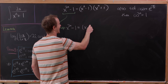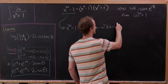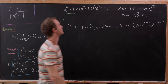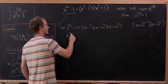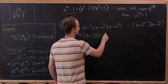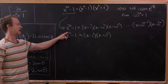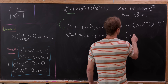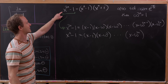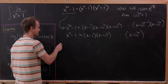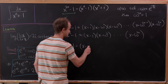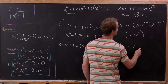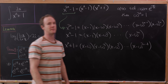We know x to the 2n minus 1 factors as (x minus 1)(x minus omega)(x minus omega squared) all the way up to (x minus omega to the 2n). Similarly, x to the n minus 1 factors using exactly the even powers: (x minus 1)(x minus omega squared) all the way up to (x minus omega to the 2n). Since x to the n plus 1 is the quotient, that gives us the factorization of x to the n plus 1 using all the odd roots: (x minus omega)(x minus omega cubed)(x minus omega to the 5th) all the way up to (x minus omega to the 2n minus 1).